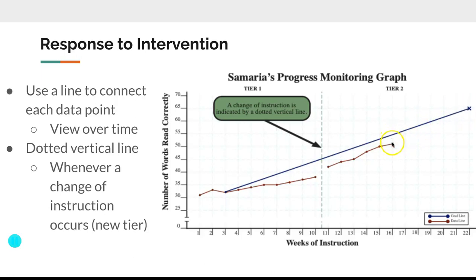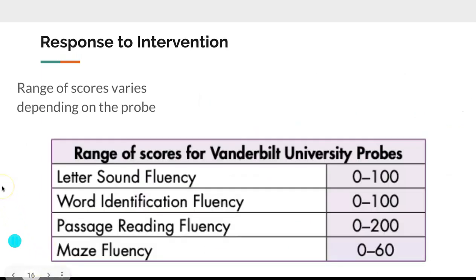The goal line shows expected progress. A dotted vertical line indicates a change of instruction — for example, before the line is tier one, after the line is tier two. The range of scores varies by probe: letter sound fluency and word identification fluency range from 0 to 100, passage reading fluency goes up to 200, and maze fluency maxes out at 60 points.